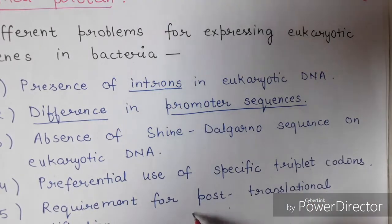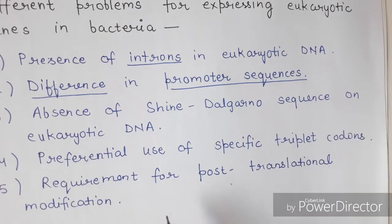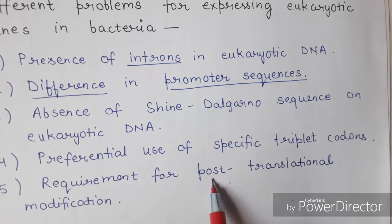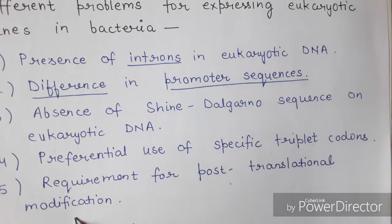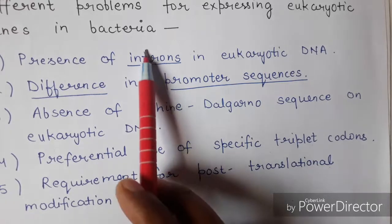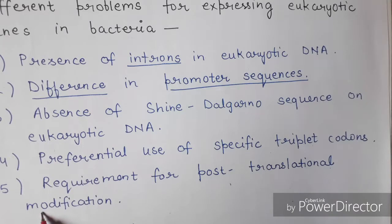The fifth problem is the requirement of post-translational modification. In the eukaryotic cell, after the protein is formed, there is a step called post-translational modification in which the protein is modified to become an activated protein. This condition is not found in the prokaryotic cell. So in bacteria, which is a prokaryotic cell, we face all these five types of problems that prevent us from expressing our eukaryotic gene in bacteria.